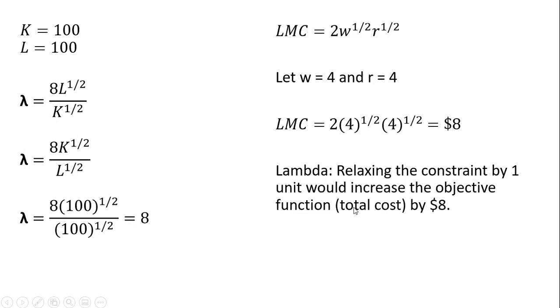So lambda is the marginal cost. Relaxing the constraint by one unit, producing one more unit of output, would increase the objective function, the total cost function, by $8. So lambda represents the marginal cost.